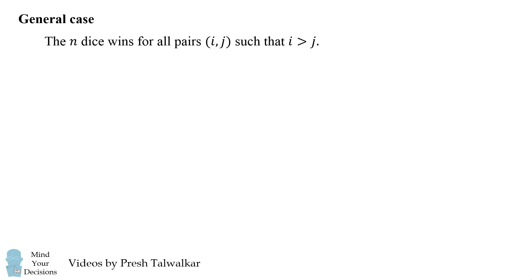In the general case, the n dice wins for all pairs i comma j such that i is greater than j. But for every such pair, there is an outcome negative i comma negative j, which must be a win for the m dice. This is because negative j will be greater than negative i.